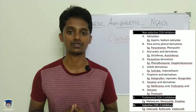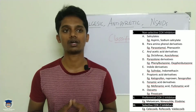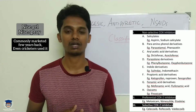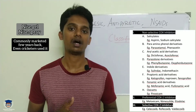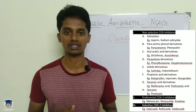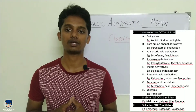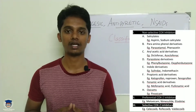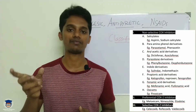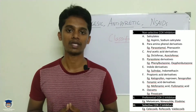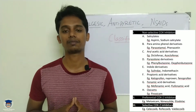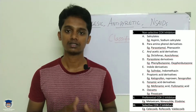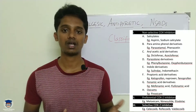The second category is preferential COX-2 inhibitors, and meloxicam is also classified in this category. The third category is selective COX-2 inhibitors. In the name, the suffix indicates COX-2 selectivity. Examples include celecoxib, rofecoxib, and valdecoxib — these are selective COX-2 inhibitors.